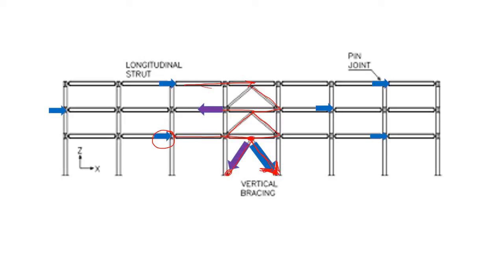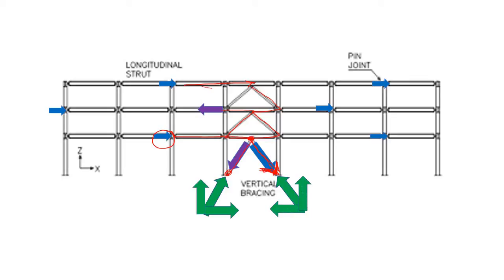So for the lateral load we will have a reaction like this — an inclined reaction. Due to this inclined reaction we will have some horizontal component as well as some vertical component. The same is also applicable for the other bracing too.